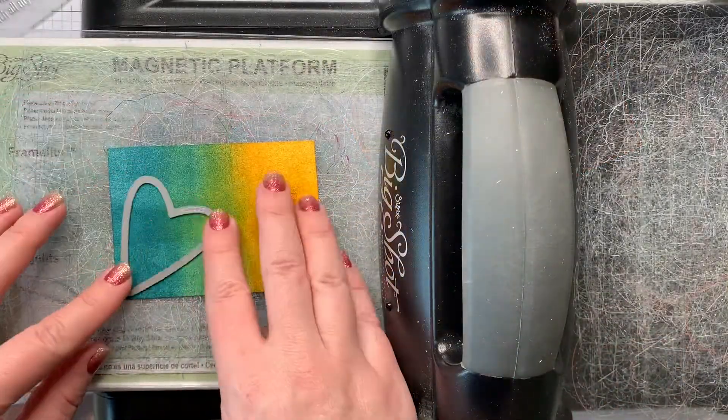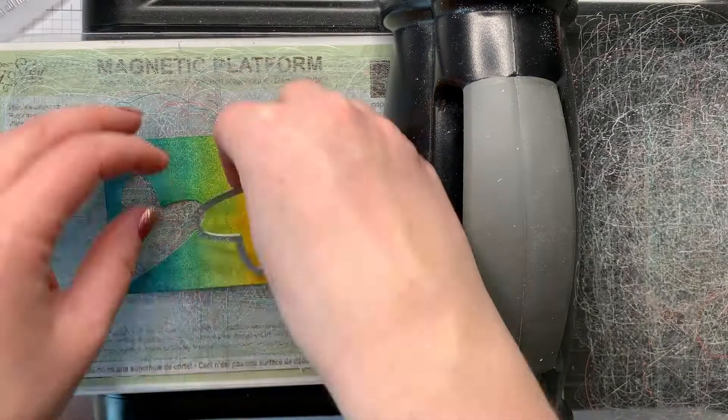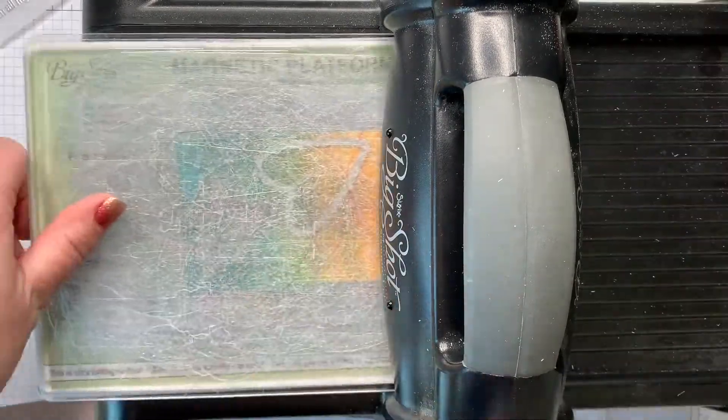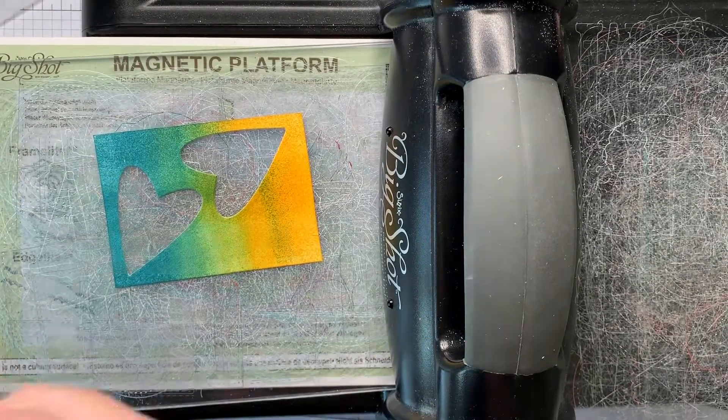I'm using several of the hearts from the Be Mine Stitched dies and I'm running them through my big shot and just getting some different color gradients with that brayered cardstock.